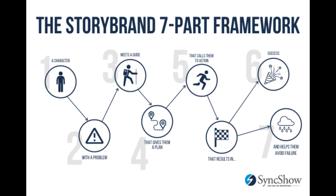Step six ends in success — what does their life look like once they have the end results your product delivers? Are they going to be down 10 pounds, feeling amazing, wearing a bathing suit and feeling free of all their insecurities? What does life look like after the transformation from buying that product? Step seven is 'helps them avoid failure' — as a copywriter, you always want to add the consequences of what happens if they don't move forward. There's that abandoned cart moment, that 'I'll hold off' moment. You have to say: if you keep waiting or neglect this, these are all the bad things that can happen.